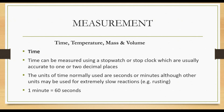Firstly, talking about time — time can be measured using a stopwatch or stop clock. These are the apparatus which we use to measure time. A stopwatch or stop clock can be used to measure time, which are usually accurate to one or two decimal places. The units of time normally used are seconds or minutes, although other units may be used for extremely slow reactions.